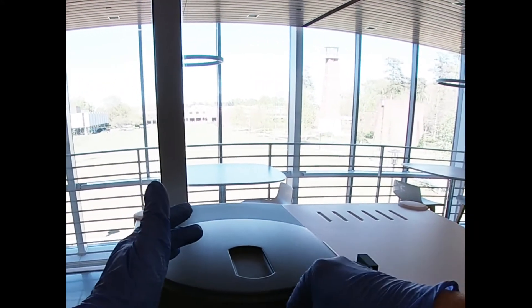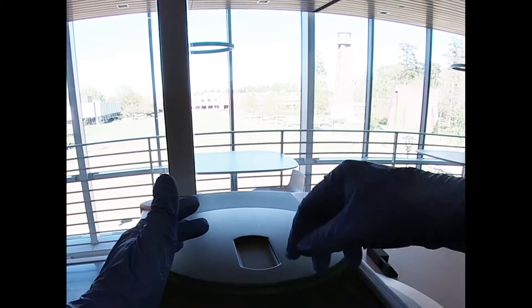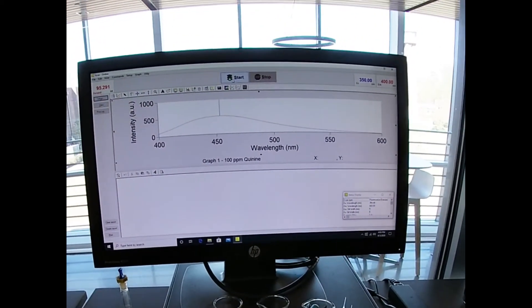We're going to take our quartz cuvette. This is also transparent on four sides, unlike the UV vis cuvettes, because we have to measure at a 90-degree angle. So we've got a cuvette placed, and we're going to start our scan.